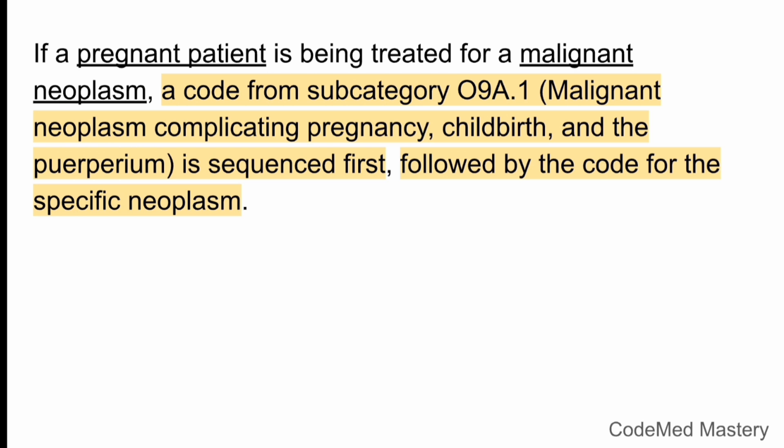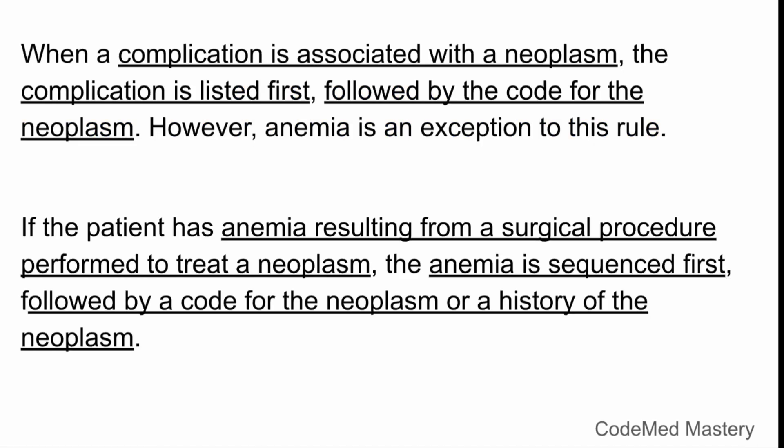Next, complications associated with the neoplasm: when a complication is associated with the neoplasm, the complication is listed first, followed by the code for the neoplasm. However, anemia is an exception to this rule. If a patient has anemia resulting from a surgical procedure performed to treat the neoplasm, then anemia is sequenced first, followed by the code for the neoplasm.